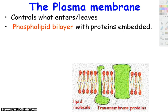Its design is a phospholipid bilayer — bilayer meaning two — so it's two layers of phospholipids. In the diagram of the membrane on the screen, the red balls represent the phosphate groups on the phospholipids. And then the two chains are the fatty acid tails coming off of that.